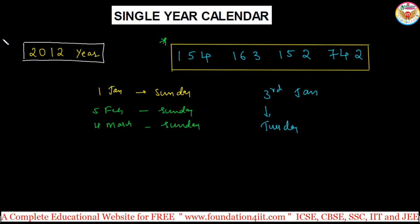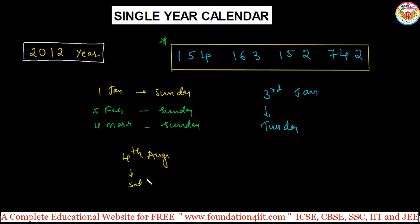Another example: what day is the 4th of August? August is the 8th month, and from the code, the 5th August is a Sunday. That means the 4th August is obviously a Saturday. It's a simple technique — just find the first Sunday from the code and count from there.